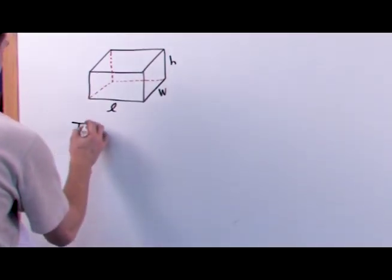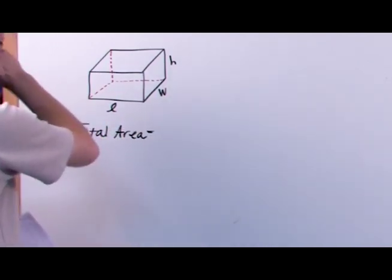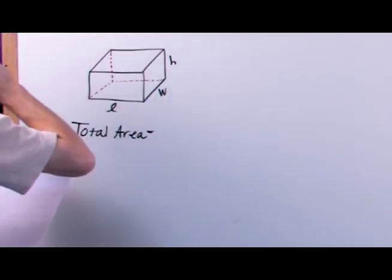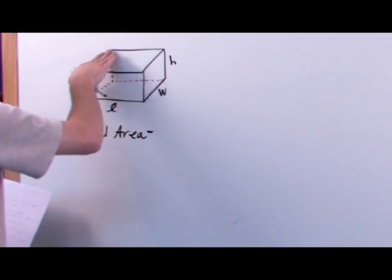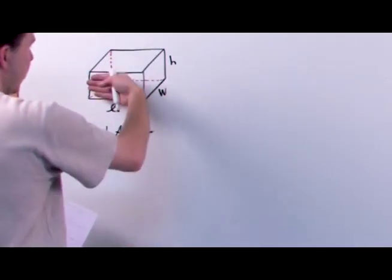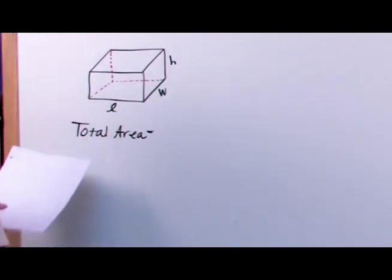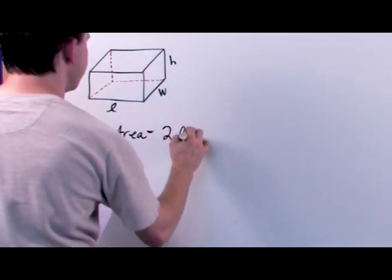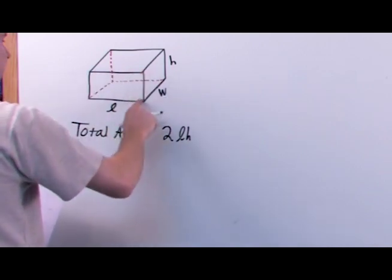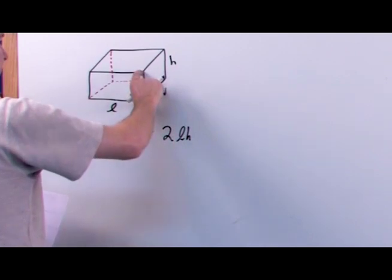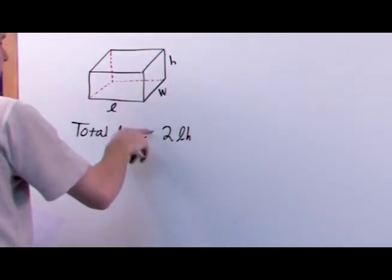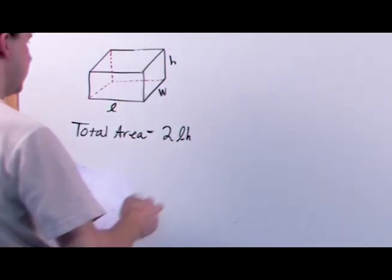The total area is going to equal the area of all of these faces added together. Notice that the top and the bottom have the exact same area, one side has the same area as the other side, and the front and the back have the same area. L times H gives you the area of the front — this is the length and this is the height. The back has the exact same size, so the area of the front and back together is two times LH.